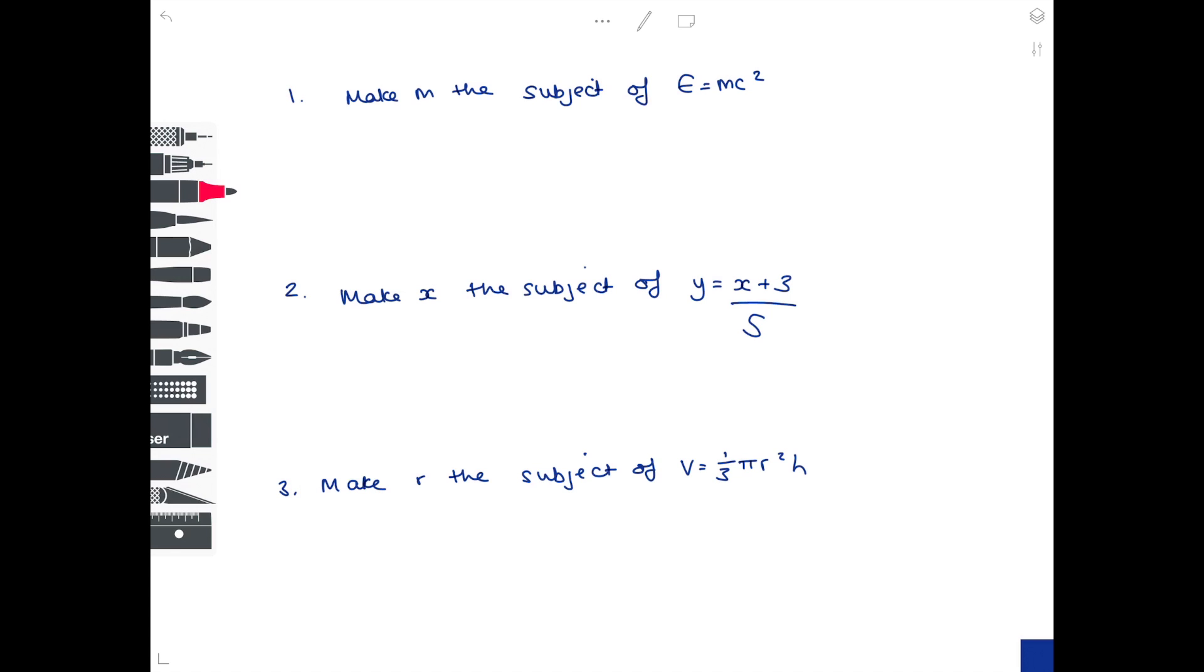So let's look at some further examples starting with question one. Make m the subject of e equals mc squared. So write it all out as it is to begin with. And now we need to work out, how do we get m by itself on the right-hand side? Because at the moment it's being multiplied by c squared. So what you really want to do here is divide by c squared on both sides. And that is your final answer. I'm just rewriting it to make sure that m is on the left-hand side.